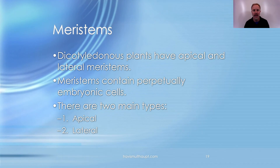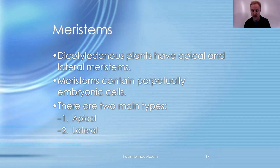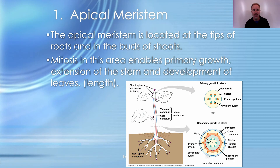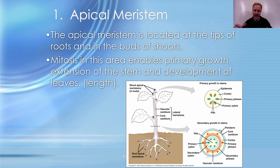Meristematic tissue is perpetually embryonic — it can continually give rise to new cell types. There are two types of meristems: apical meristems and lateral meristems. The apical meristem is located at the tips of roots and shoots. In the onion lab, we looked at mitosis in the meristematic tissue of the apical meristem. Mitosis in these locations enables primary growth — the elongation of roots, shoots, and leaves.